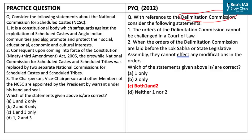The practice question says: consider the following statements about the National Commission for Scheduled Castes. The first statement is that it is a constitutional body which safeguards the interests of Scheduled Castes and Anglo-Indian communities against exploitation and also promotes and protects their social, educational, economic, and cultural interests — this is correct. The second statement says that consequent upon the 93rd Amendment Act of 2005, the erstwhile National Commission for Scheduled Castes and Scheduled Tribes was replaced by two separate commissions for SC and ST — this is wrong, as it was the 89th Constitutional Amendment Act of 2003 that provided for the separation.